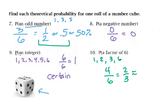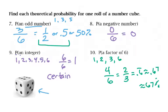I can write two-thirds as a decimal — exactly 0.6 repeating — or round it to 0.67, which is about 67%. It just depends on how you're told to write your answers. If a question like this is on your homework and it doesn't specify, any form is fine.